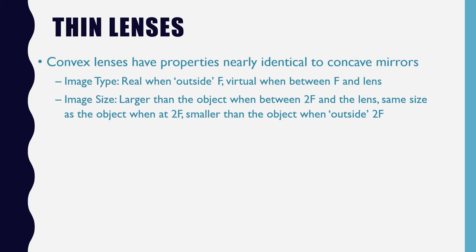As far as image size goes, the image is larger than the object when it's between 2F and the lens. The image is the same size as the object when the object is located at 2F. And the image is smaller than the object when your object is outside of 2F or further from the lens than 2F.